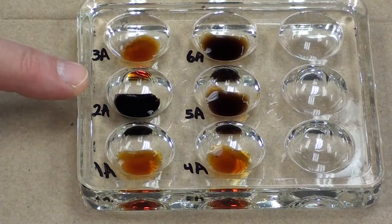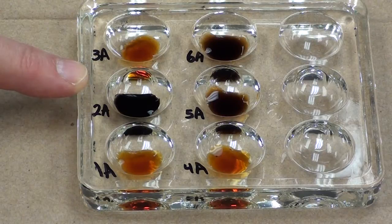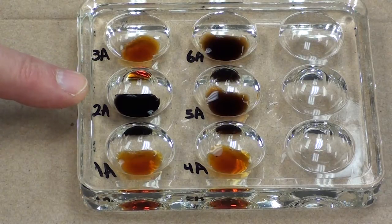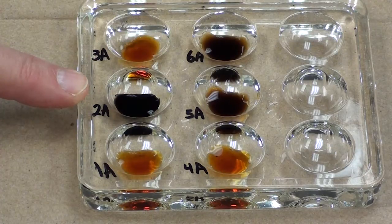Test tube 2 contained starch and water. No digestion occurred of the starch without an enzyme. We have shown that by the iodine reaction between the starch and the iodine.